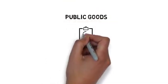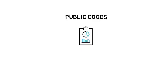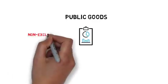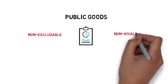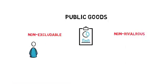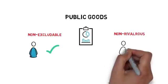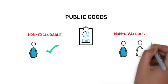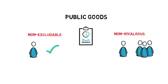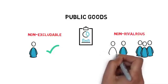In economics, a public good is a good that is both non-excludable and non-rivalrous. So individuals cannot be excluded from use and use by one individual does not reduce availability to others. A public good can also be used simultaneously by more than one person.